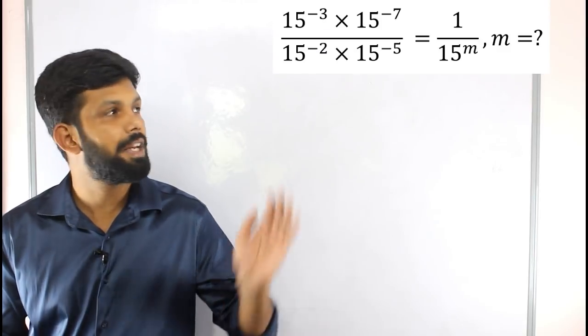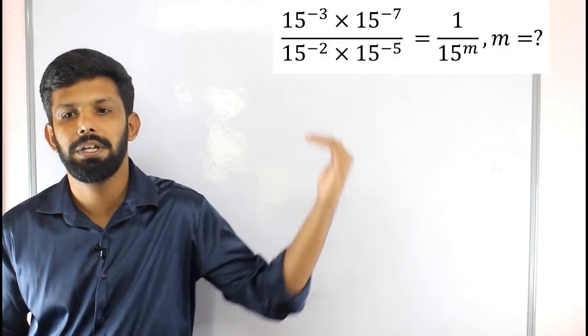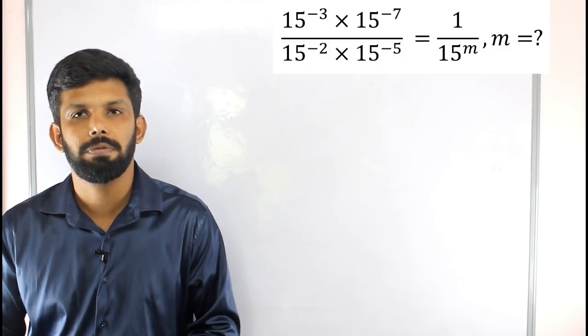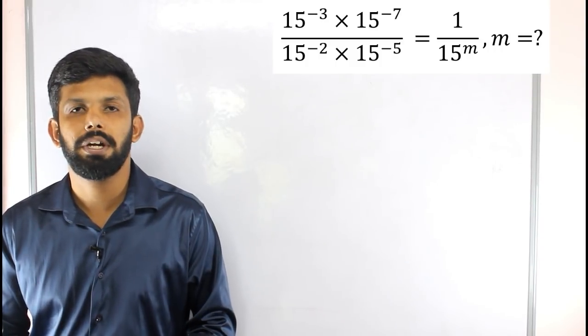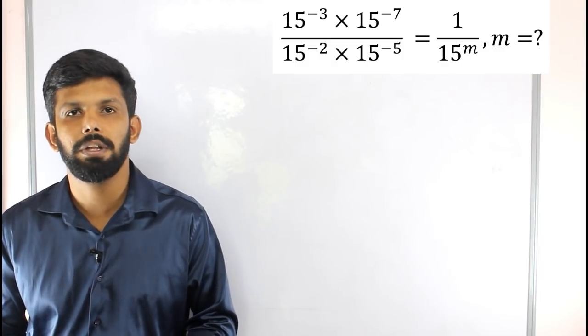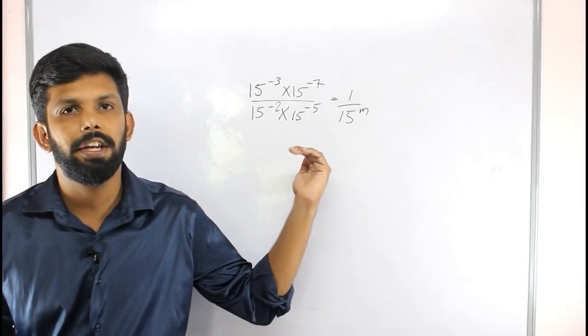In August 8th, the lab assistant exam — math and mental ability section. Now the first question is: 15 raised to minus 3, into 15 raised to minus 7, divided by 15 raised to minus 2, into 15 raised to minus 5, is equal to 1 by 15 raised to m. What is the value of m? The topic is laws of exponents.